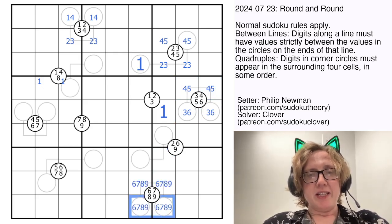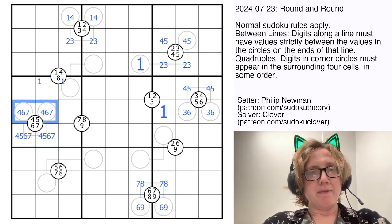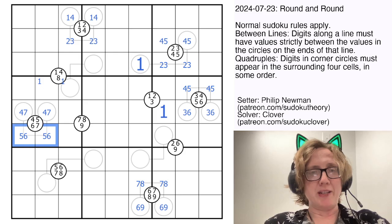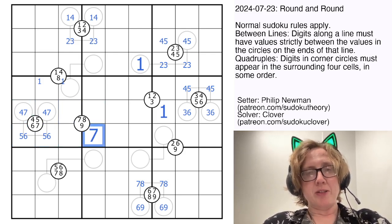4 and 5 are going to be between 3 and 6. 6, 7, 8, and 9 here. 7 and 8 are between 6 and 9. 4, 5, 6, 7 here. 5 and 6 are between 4 and 7. Now we need to place a 7 around this quadruple. It can't go in these cells because of the 4, 7 pair, so it must go there.